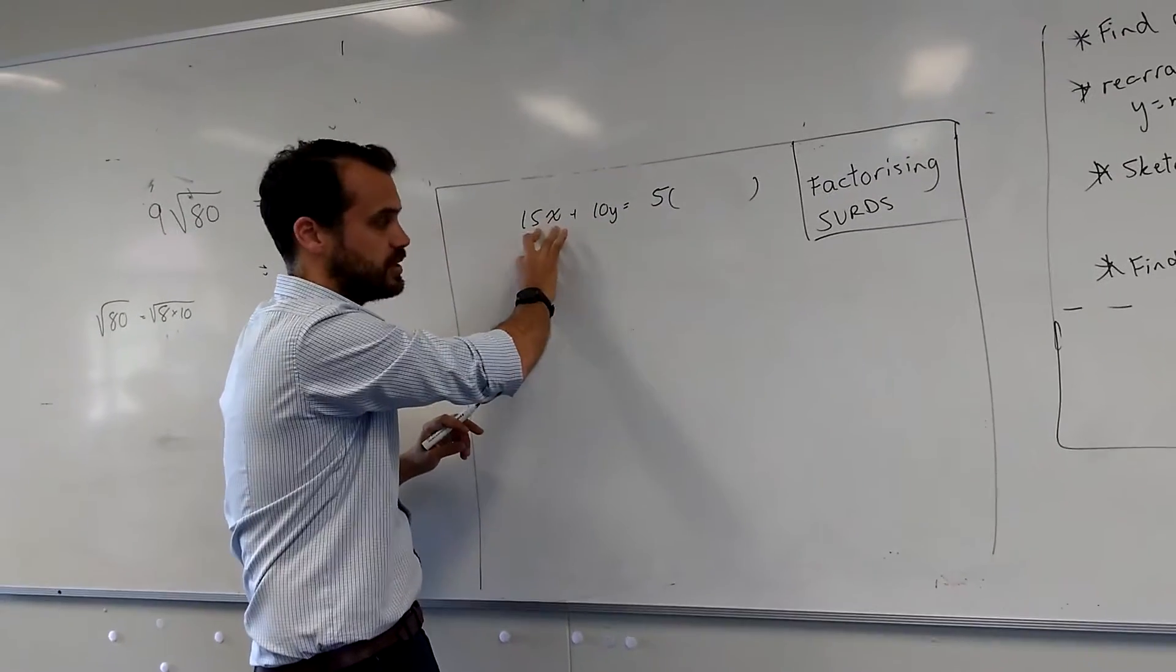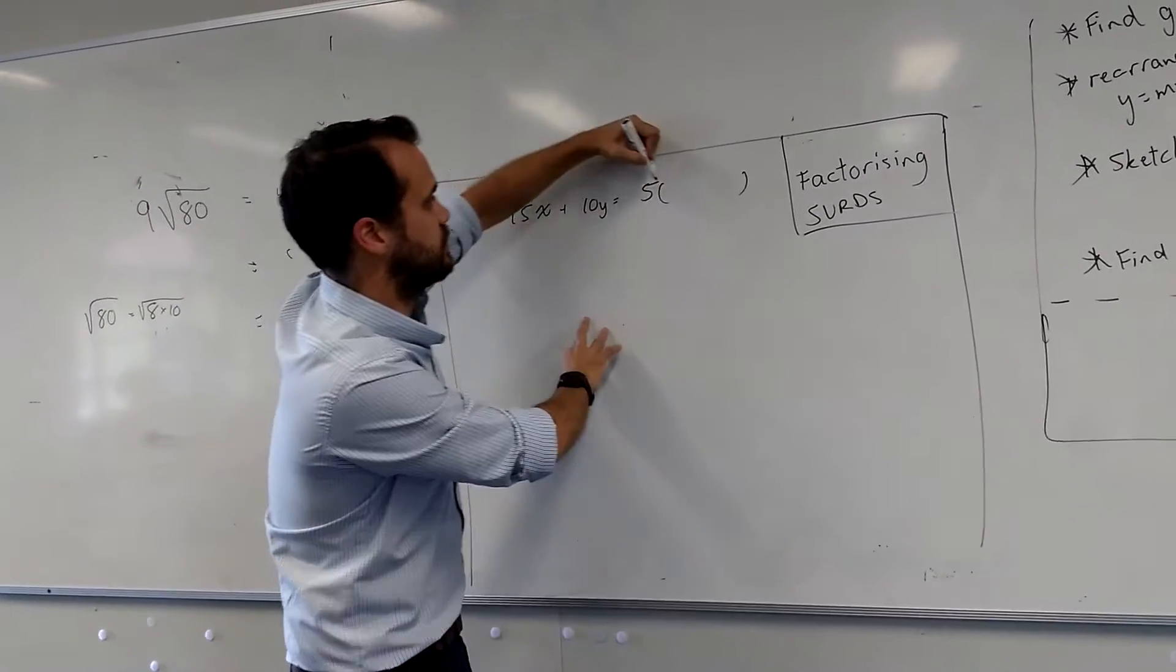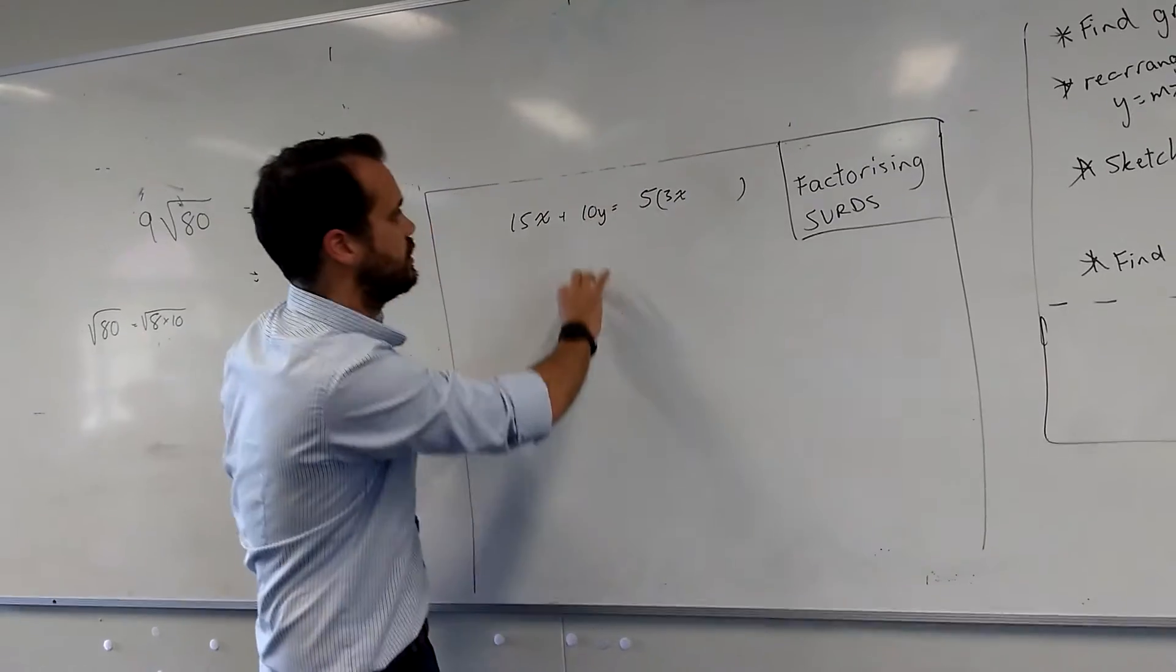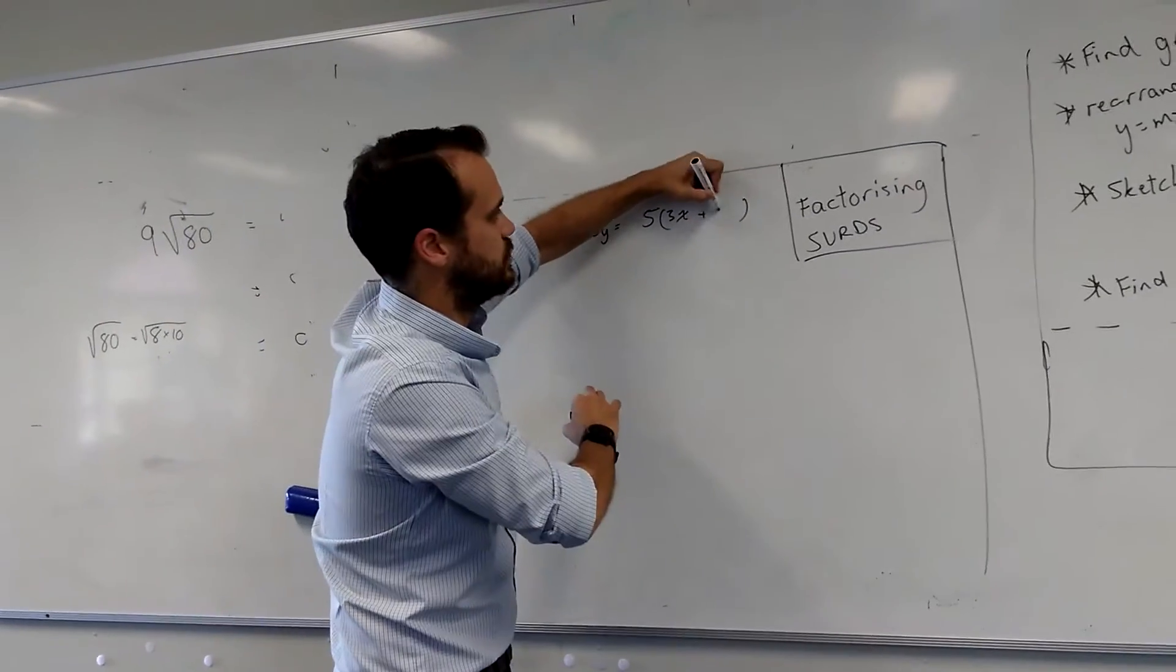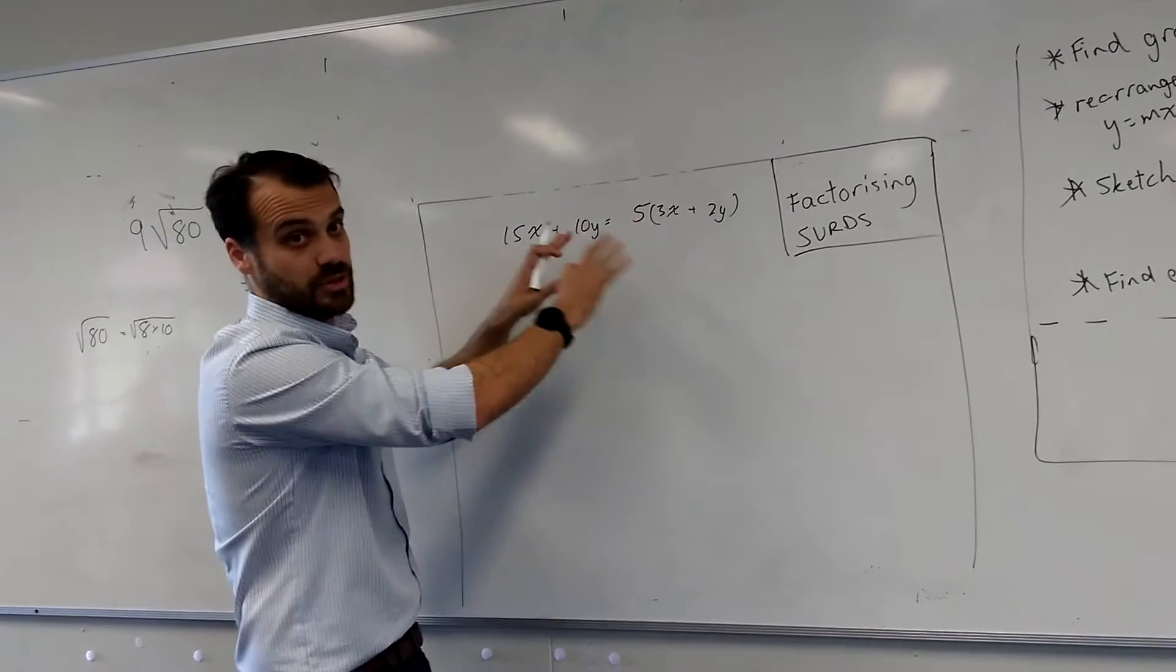and 5 times something makes 15x, that's 3x. And 5 times something makes 10y, that's 2y. So that's factorizing algebraically.